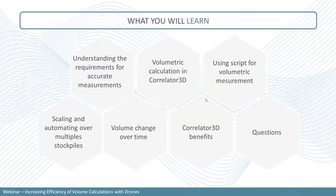We'll also talk about how you can calculate volume change over time — for example, if you have two drone flights, one at the beginning of summer and one at the end, how you can compare those changes. Finally, we'll finish the webinar by talking about Correlator 3D benefits and have a question session. Feel free to write questions in the chat box and we'll answer them at the end.